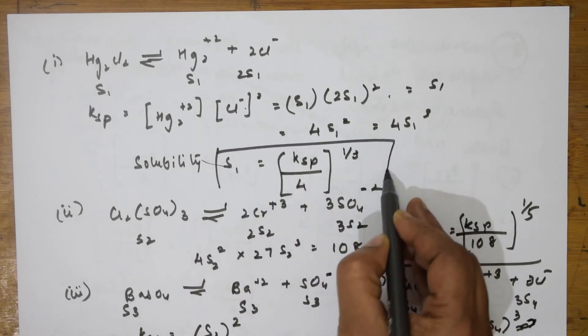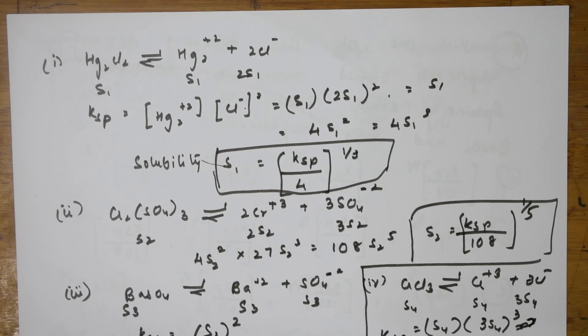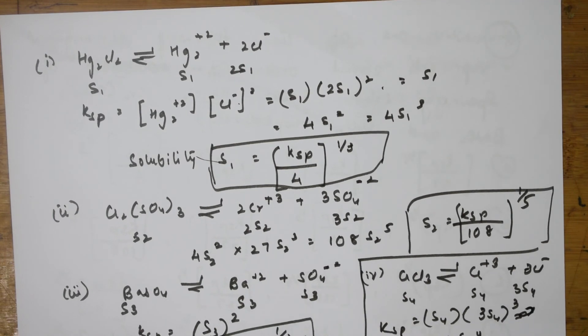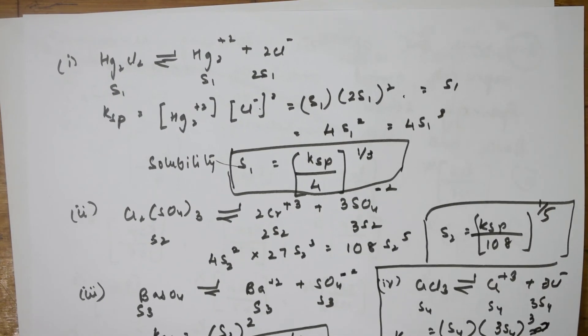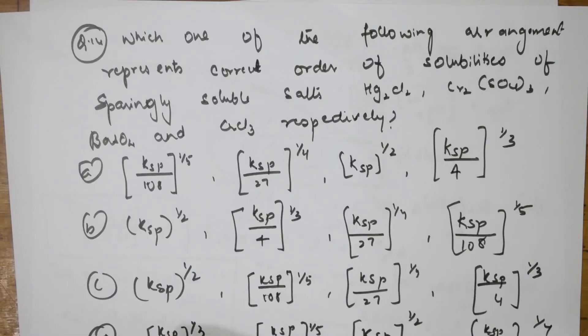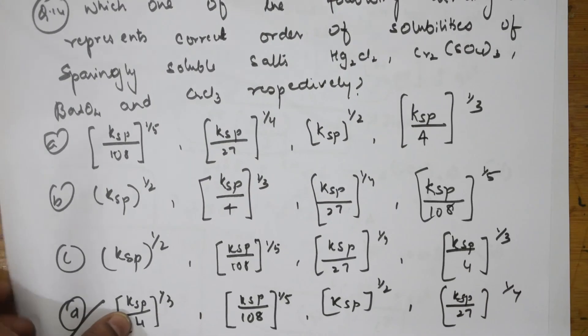Summarizing the solubility expressions: s₁ = (Ksp/4)^(1/3), s₂ = (Ksp/108)^(1/5), s₃ = Ksp^(1/2), s₄ = (Ksp/27)^(1/4). Comparing these, the correct order of solubility corresponds to option C, matching the expressions we derived for these four sparingly soluble salts.